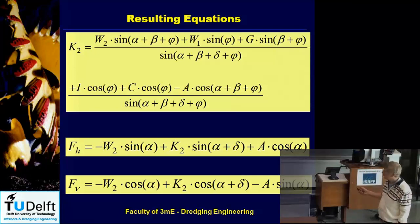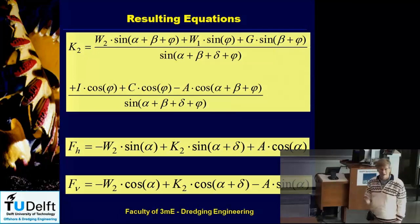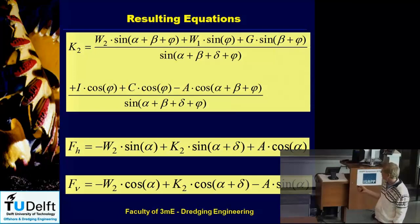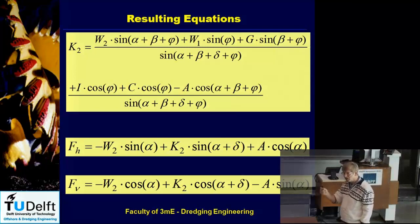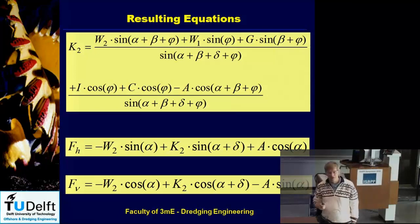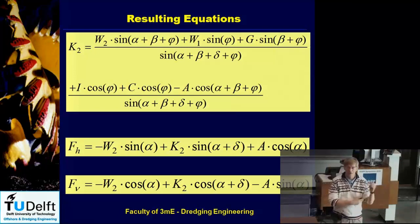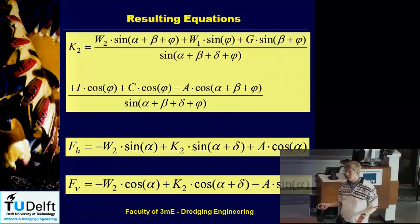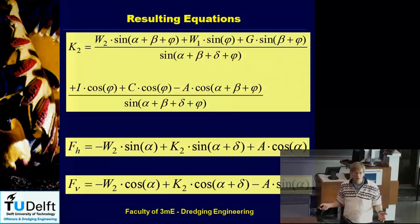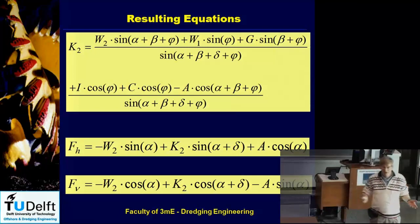If you divide by the sine of those angles and the sum of those angles gets close to 180 degrees, you have a problem, because the sine will be zero, and that would mean the force becomes infinite — which is impossible. For hard sand in dredging, phi could be around 45 degrees, delta around 30 degrees — that's already 75 degrees together. With beta around 25 degrees in sand, those three angles together are about 100 degrees.